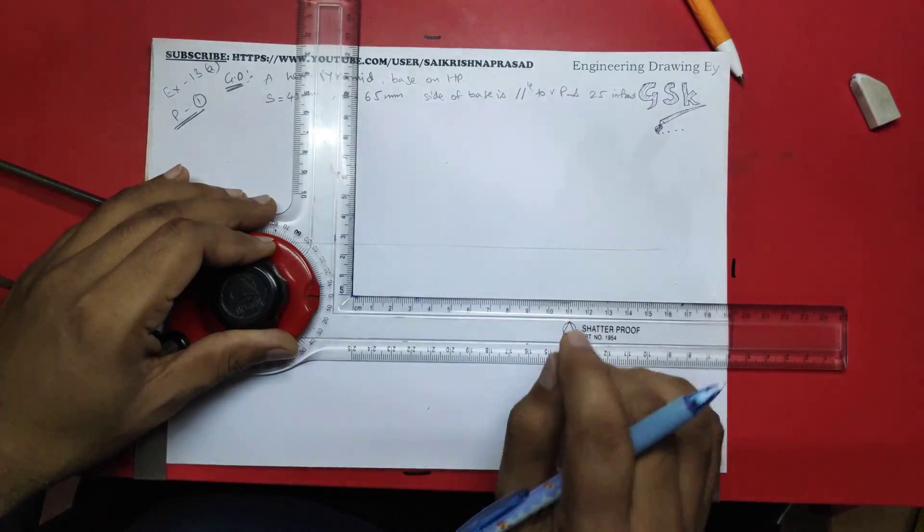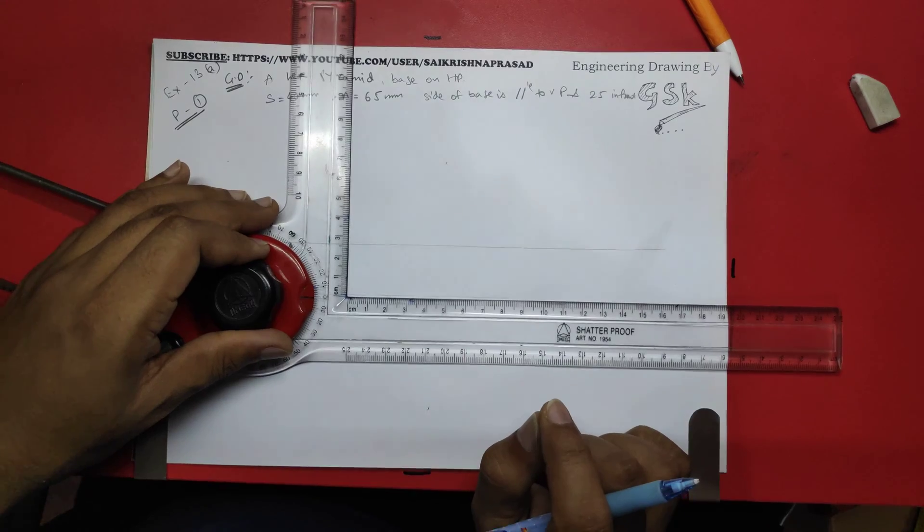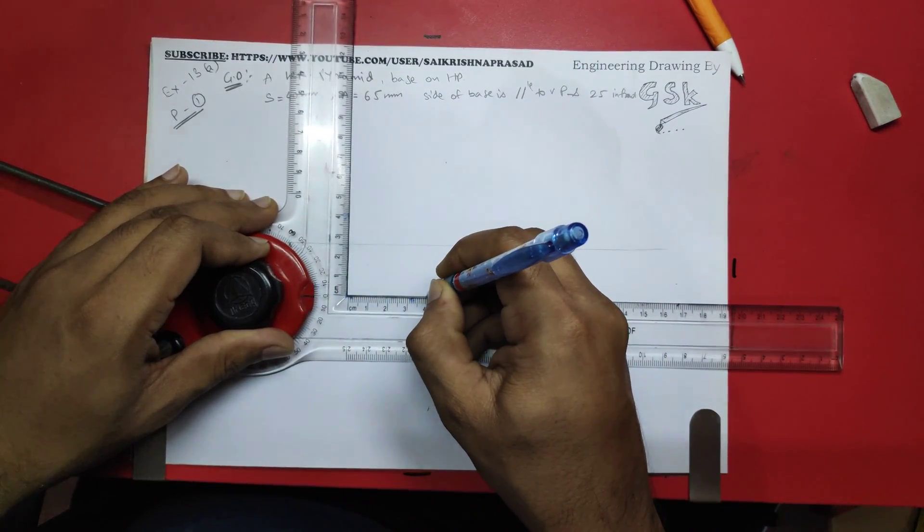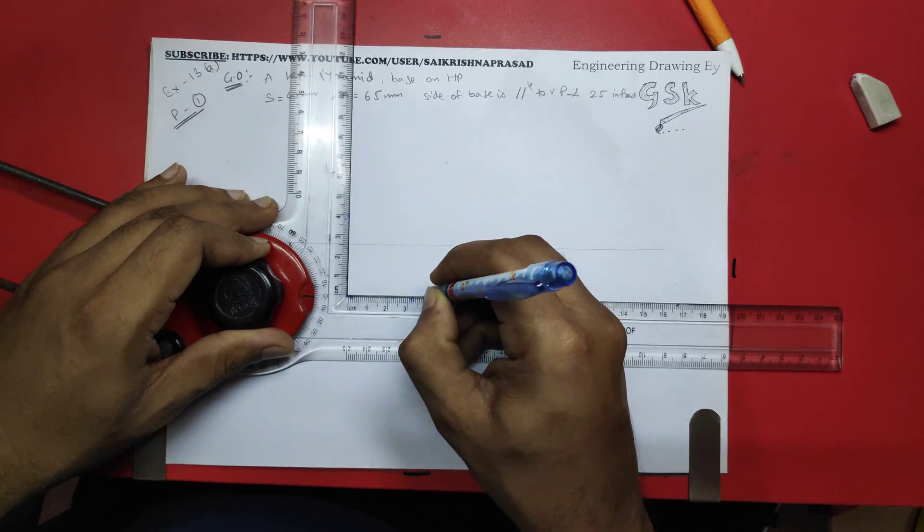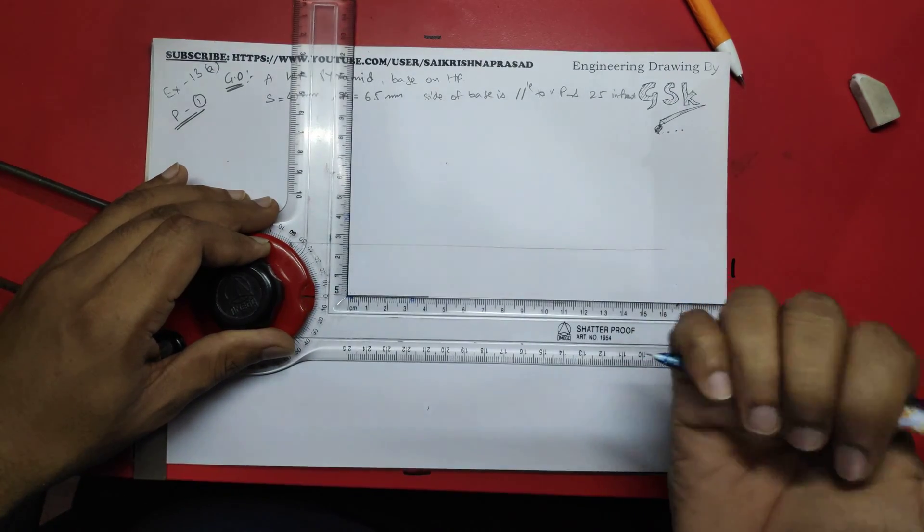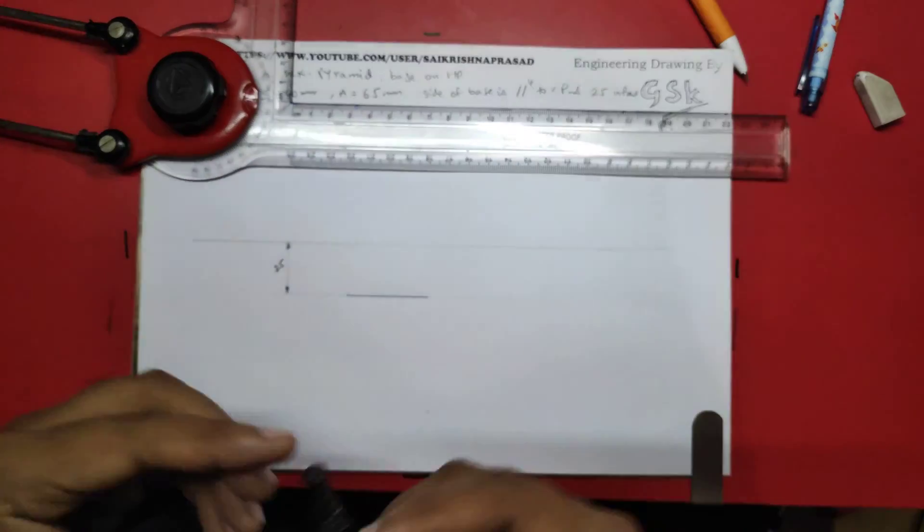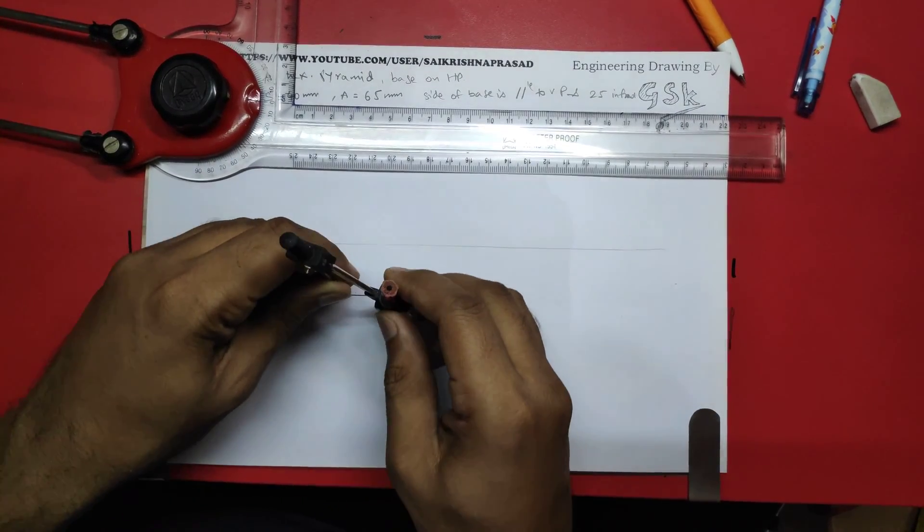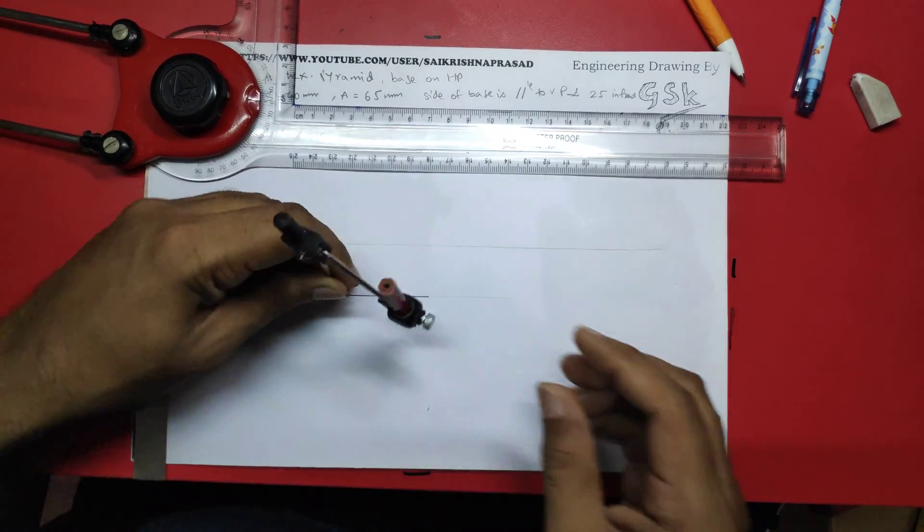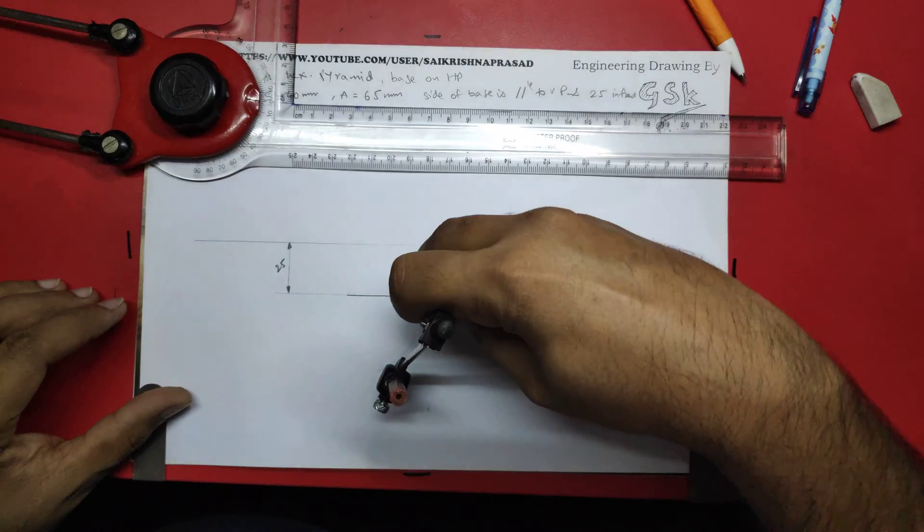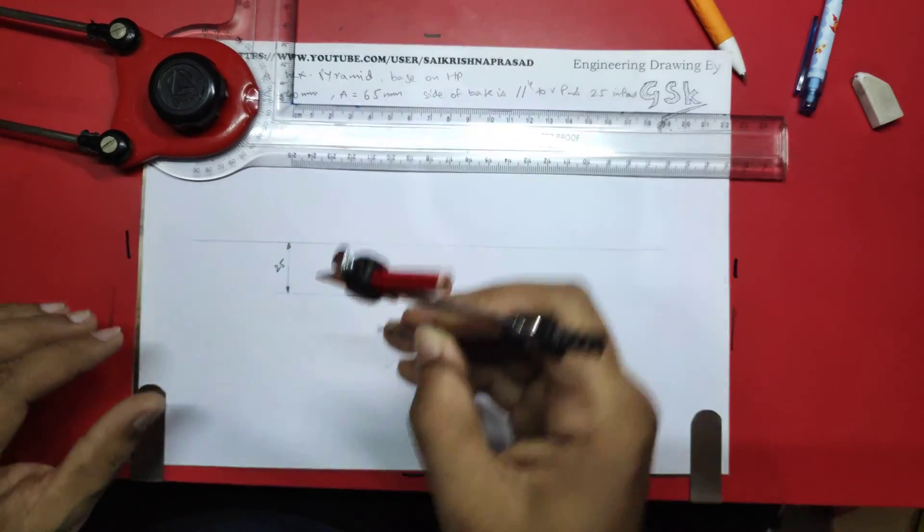The side is 40 mm. The best way of drawing any hexagon would be forming an inscribed circle. For this, I have to get the center point, a half point.